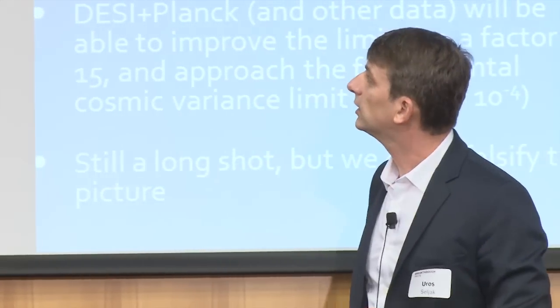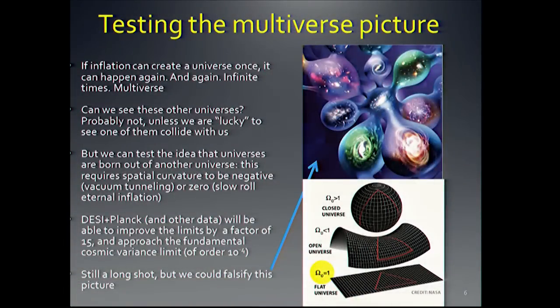Let me move on to something even more ambitious: testing the whole multiverse picture. As you know, inflation can generate a universe, and if it happens once it can happen many, even infinite, times. The obvious question is can we see other universes? In most cases the answer is no, unless one collides with ours. But we can still test this picture by looking at the curvature of the universe. If a baby universe is born out of the vacuum of a parent universe, its spatial curvature has to be negative; with slow-roll inflation it may be zero. We never have positive curvature in this scenario.